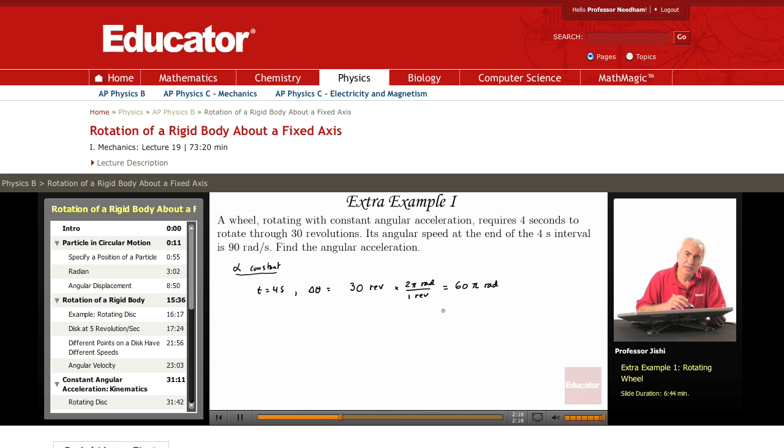So the angular displacement is 60 pi radians. So given the time is four seconds, I know the angular displacement. We know that delta theta is omega zero t plus half alpha t squared.